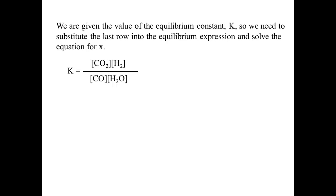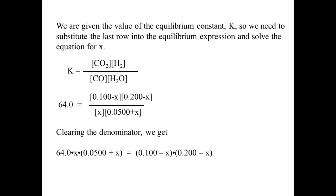Substituting the value of K and the last row of the table into the equilibrium expression, we get 64.0 equals 0.100 minus X times 0.200 minus X divided by X times 0.0500 plus X. Expanding the polynomials, we get 64.0 times X times 0.0500 plus X equals 0.100 minus X times 0.200 minus X.